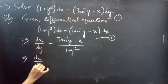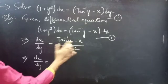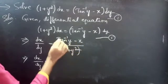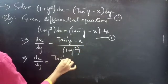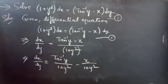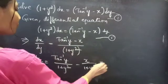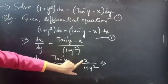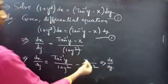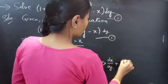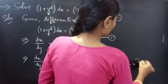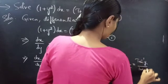So dx/dy equals — if you notice, in the numerator of the RHS you have two terms, and considering (1 + y²) as one term, we can split this into two terms: tan⁻¹y/(1 + y²) minus x/(1 + y²). Now, taking the term involving x to the LHS, we get dx/dy plus x/(1 + y²) equals tan⁻¹y/(1 + y²).